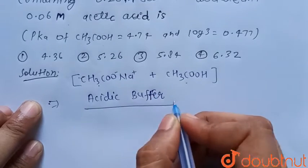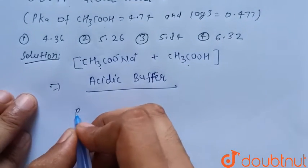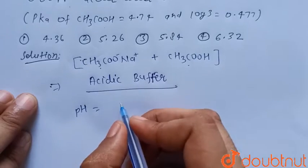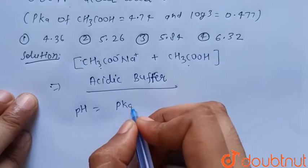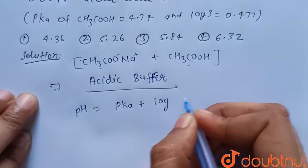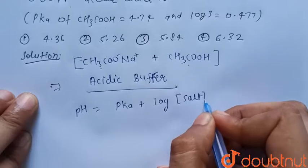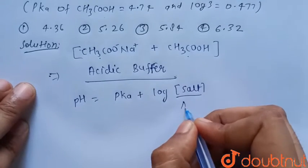We have to find the pH of the acidic buffer. The pH of an acidic buffer is given by pH = pKa + log([salt]/[acid]).